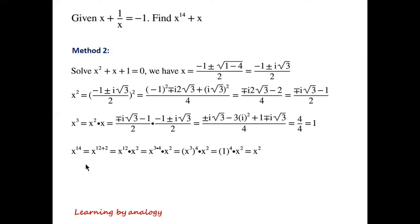x to the power of 14 can be written as x to the power of 12 plus 2, which equals x to the power of 12 times x squared, which can be written as x to the power of 3 times 4, times x squared, which equals x cubed to the power of 4 times x squared equals 1 to the power of 4 times x squared equals x squared.